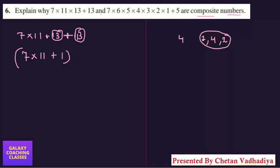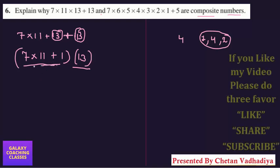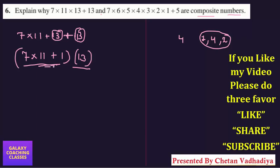When you are taking 13 common from these two, here 13 will remain. So you can see here we are getting two factors other than one and the number itself. So we can say this is a composite number. No need of solving this. You are getting two factors other than the number itself and one, so total four factors. This is a composite number.